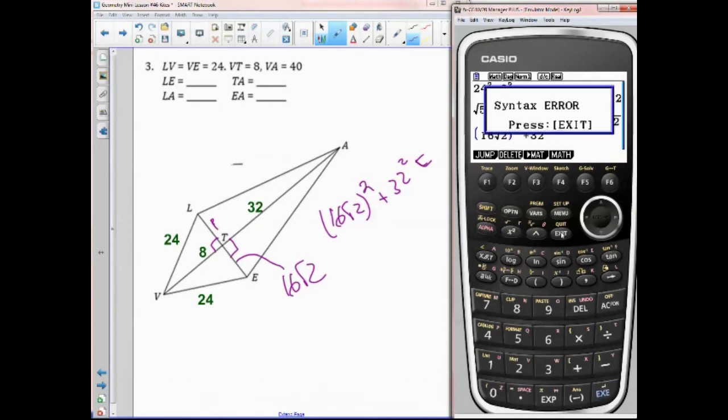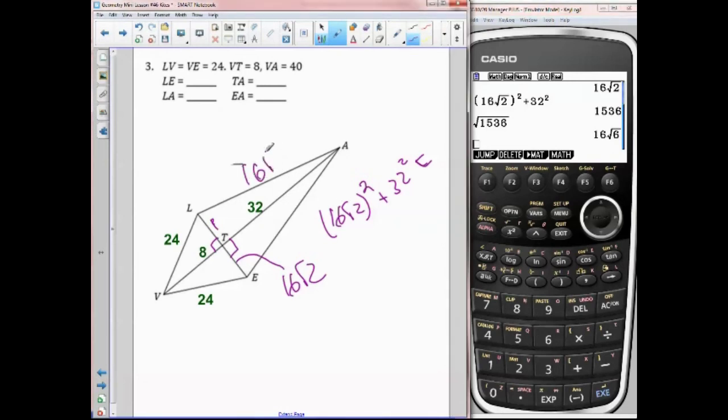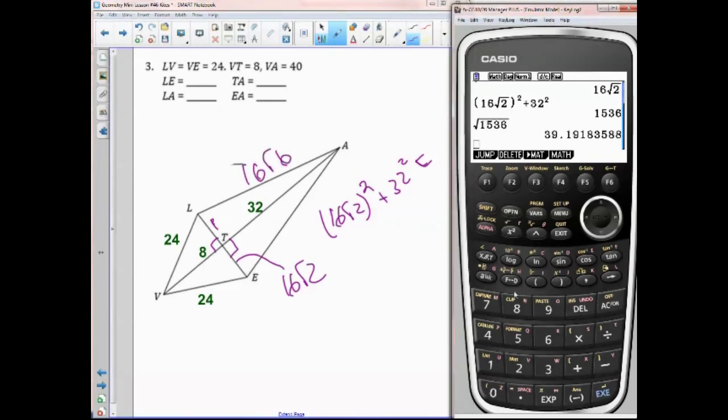I'm going to do my parentheses. 16 shift radical 2 parentheses. I have to tab over, hit the square button, plus 32 squared. And I get a syntax error. I did not put the parentheses. Let's delete it all. 16 shift radical 2 parentheses squared plus 32 squared. And 1536, I'll take the square root of that. And I get 16 radical 6. So this side right here is 16 radical 6, or if I wanted to do that, about 39.2-ish.